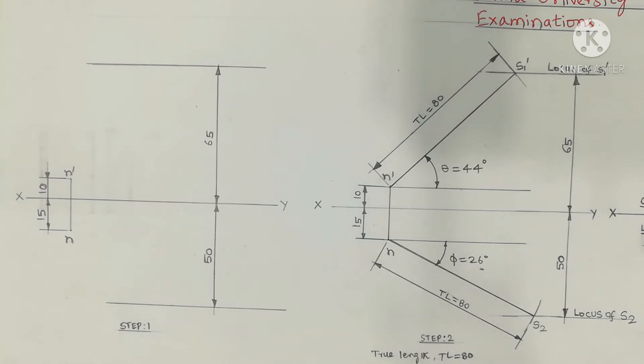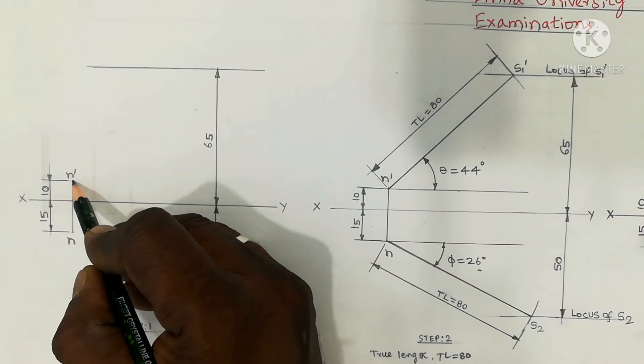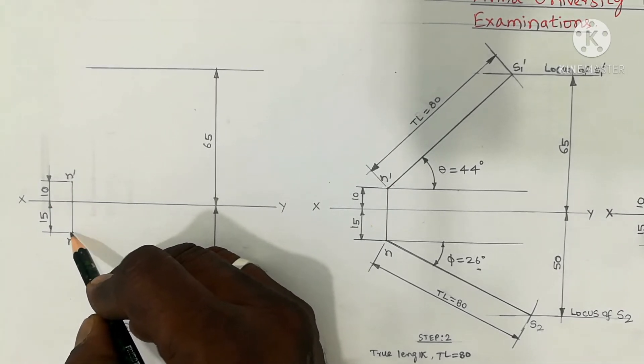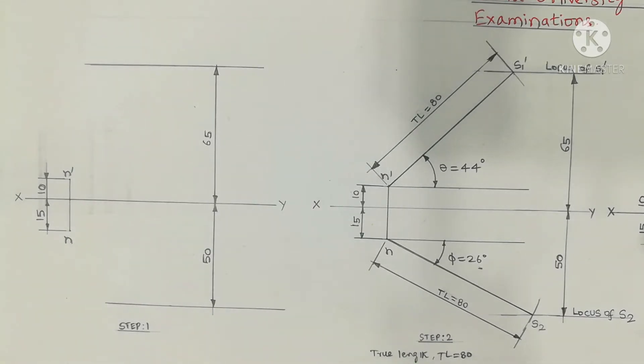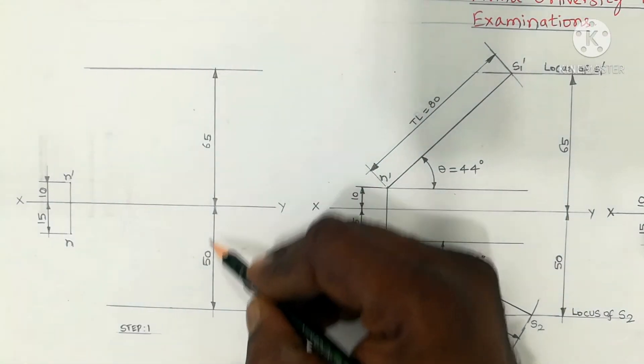So one end point N is 10mm above the HP, 15mm in front of VP. That will come below the x-ray line. One end point N data. So another end point is S. S is 65mm above the HP and 50mm in front of VP. In front of VP, the distance from the x-ray line.